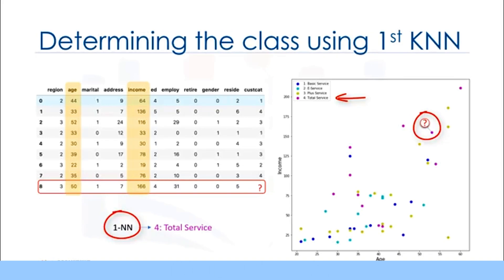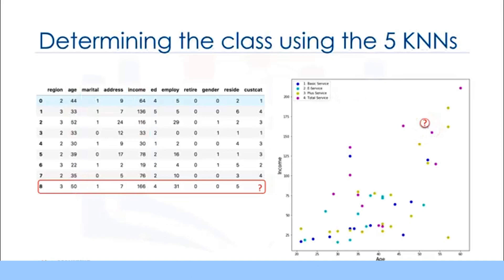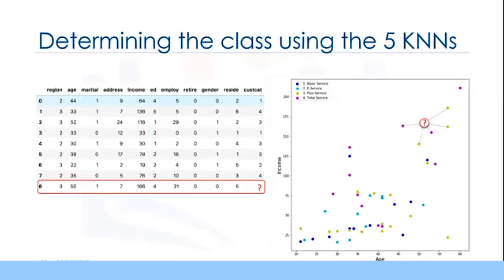It might be a poor judgment, especially if the first nearest neighbor is a very specific case or an outlier, correct? Now, let's look at our scatter plot again. Rather than choose the first nearest neighbor, what if we chose the 5 nearest neighbors and did a majority vote among them to define the class of our new customer?